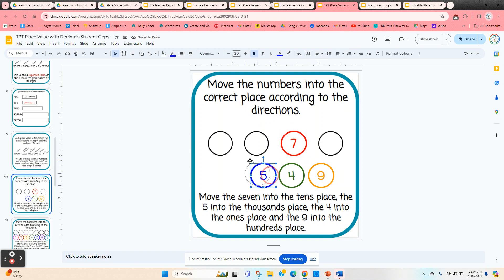The 5 goes in the thousands place. And again, these are all whole numbers. We're going to get into some decimals a little bit later. 4 goes in the ones place, and 9 goes in the hundreds place.